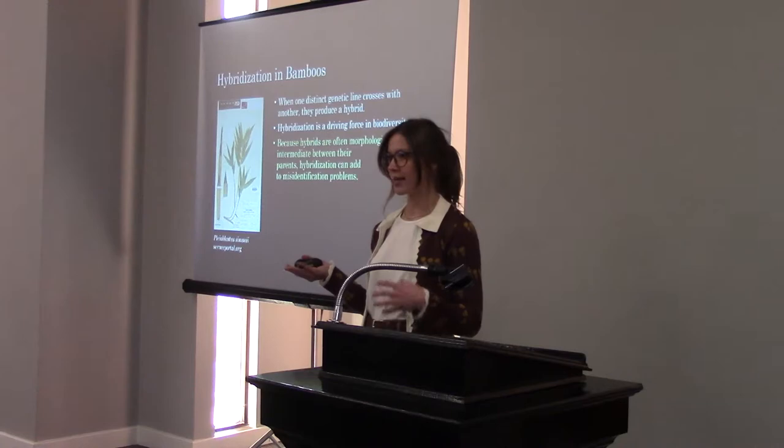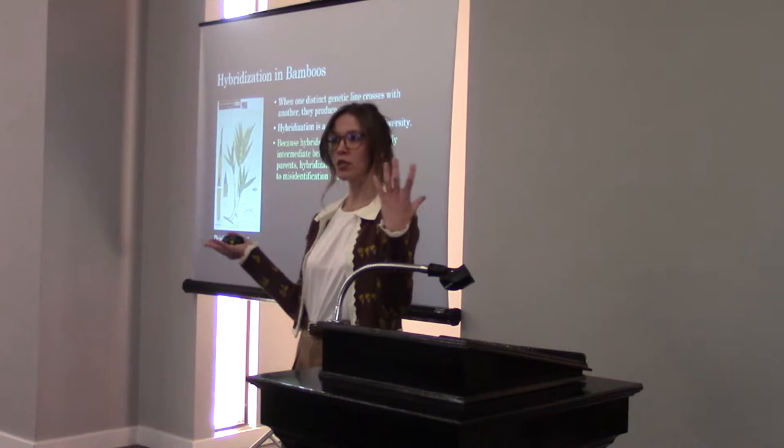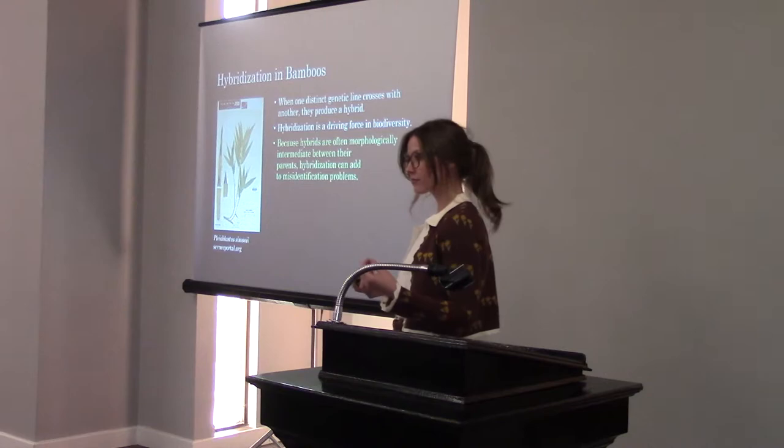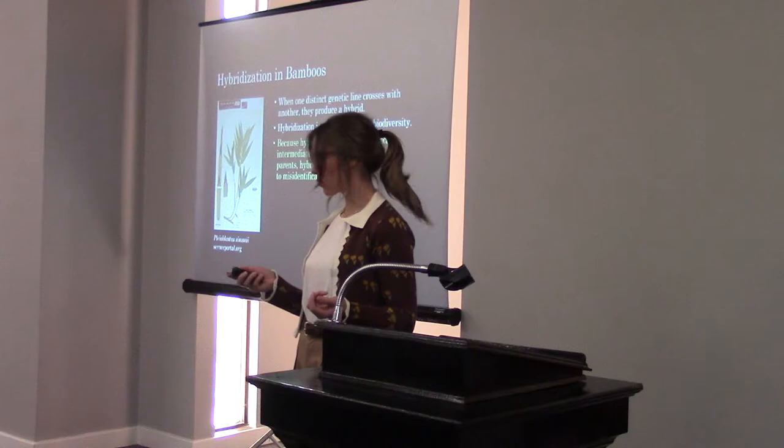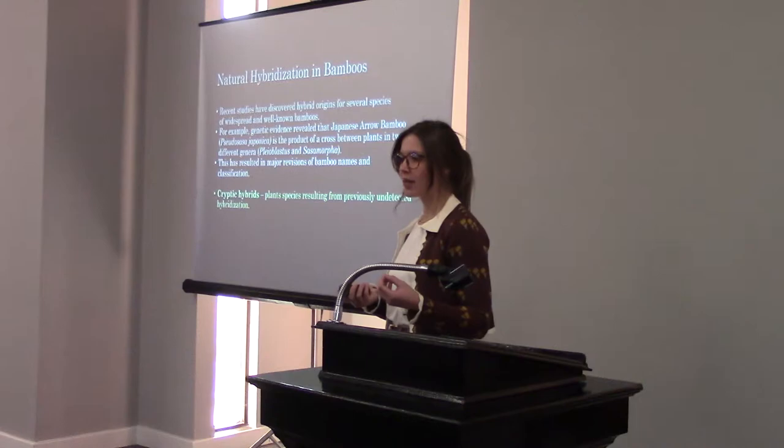To turn a corner: hybridization is when one distinct genetic line crosses with another and creates a hybrid. You can think of it as one parental species crossing with another parental species to make offspring. This is a driving force in biodiversity. And since these hybrids are morphologically intermediate — meaning they share characteristics between their parents — hybridization can add further to these misidentification problems.